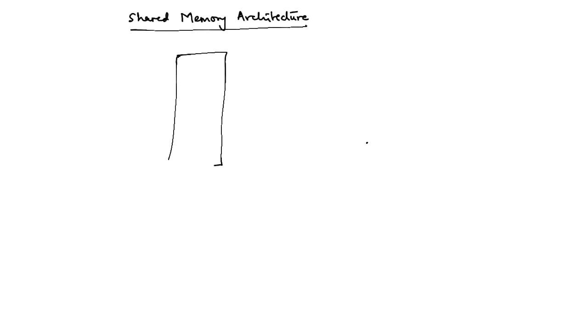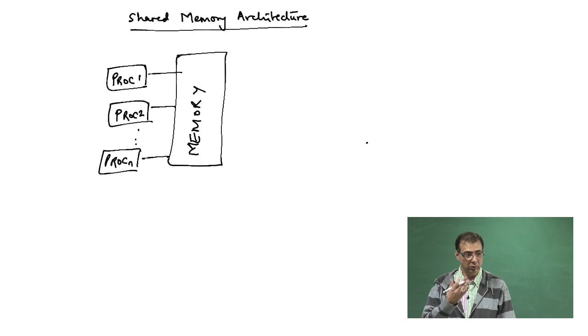What happens in this case is you have a large memory unit and you have multiple processes which are accessing this. This is analogous to what we just discussed, where all of you were trying to use the blackboard. The blackboard was nothing but your memory, and you were trying to use the blackboard to communicate with each other.